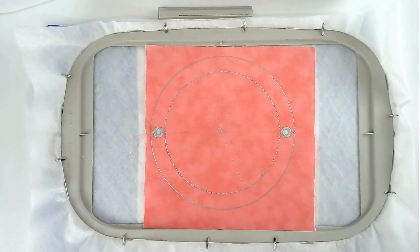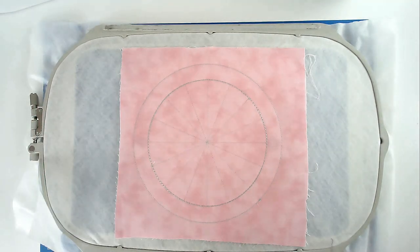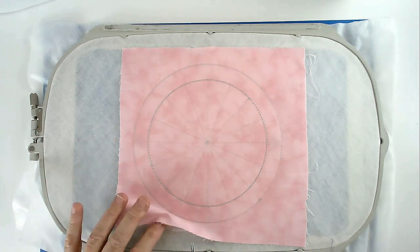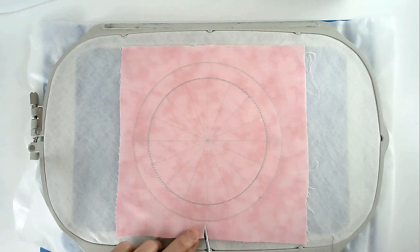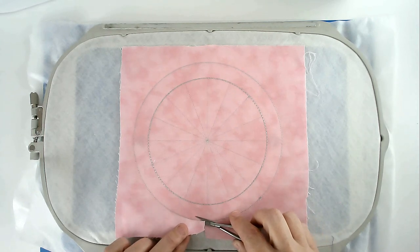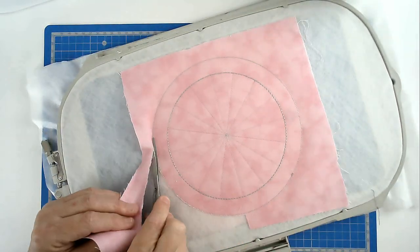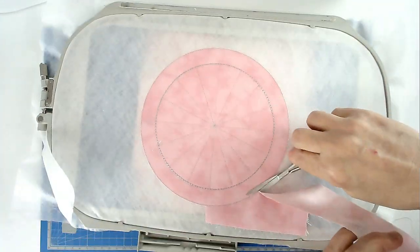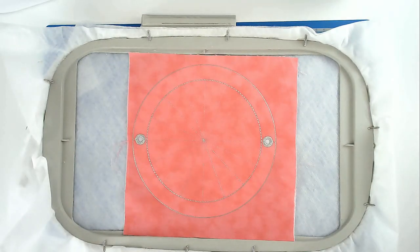We're now going to trim up the excess fabric from both back and front of the hoop, so turn your hoop over. Now I'm going to apologize if I go out of shot while I cut this, but I really don't have a lot of room underneath my camera for this size hoop, so trim around the edge of the stitch line, taking care not to cut your stitches. And you're now going to do the same on the front.